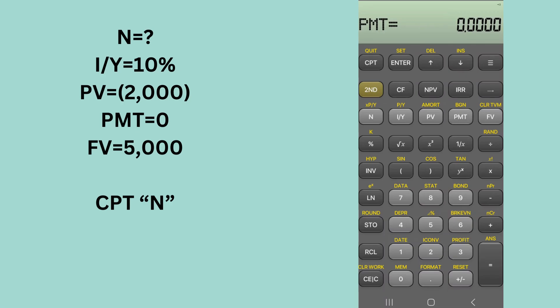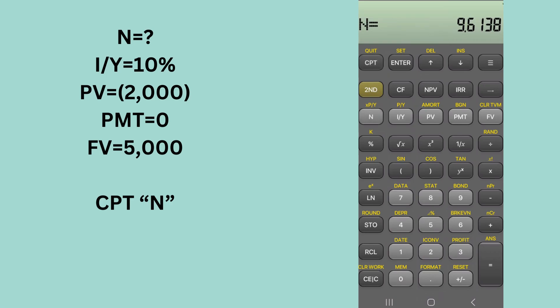The reason you want to put zero in for payment is that if you have a payment left in your calculator from a previous problem, it will mess up your answer. So $5,000 is going to be the future value. Then go back and compute n. In this case, n is going to be 9.61 years.